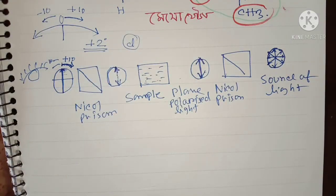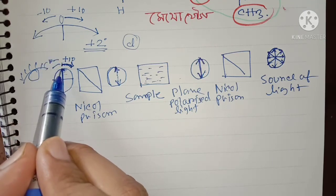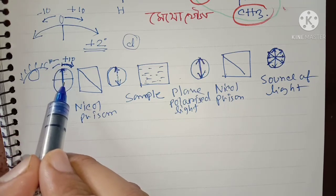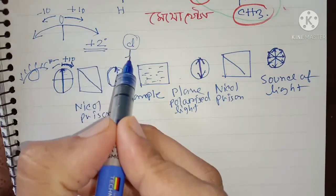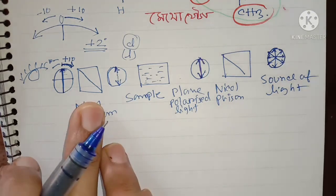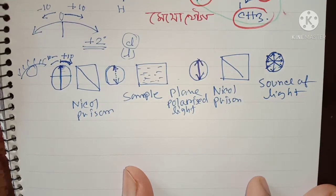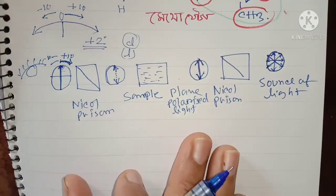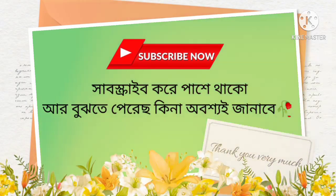তার মানে হচ্ছে dextrorotatory compound। তার মানে হচ্ছে আমরা যদি minus সেই দিকে দেখি, যেটা minus সেই দিকে যাচ্ছে, তো অন্ধকার অঞ্জল পাঠাচ্ছে — that means it is levorotatory. Thank you so much for joining us.